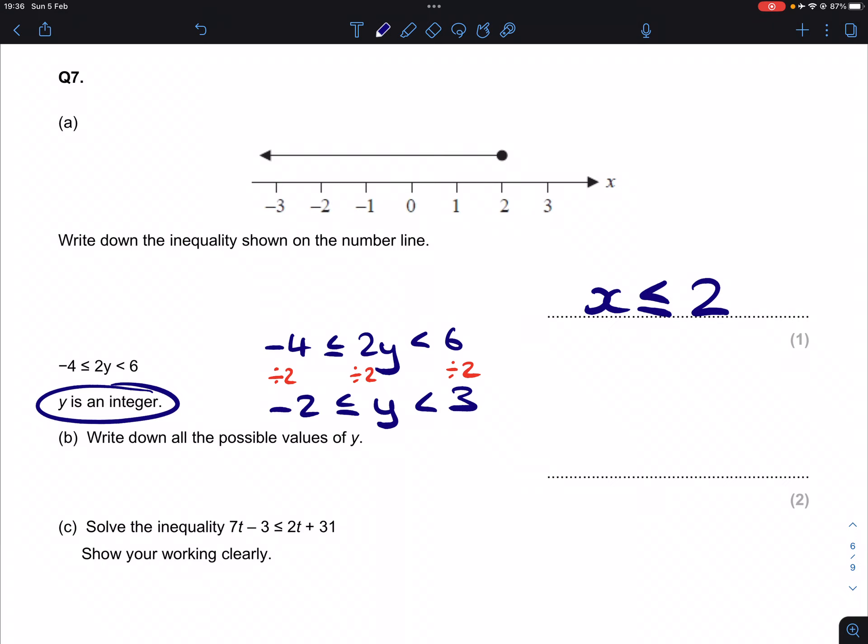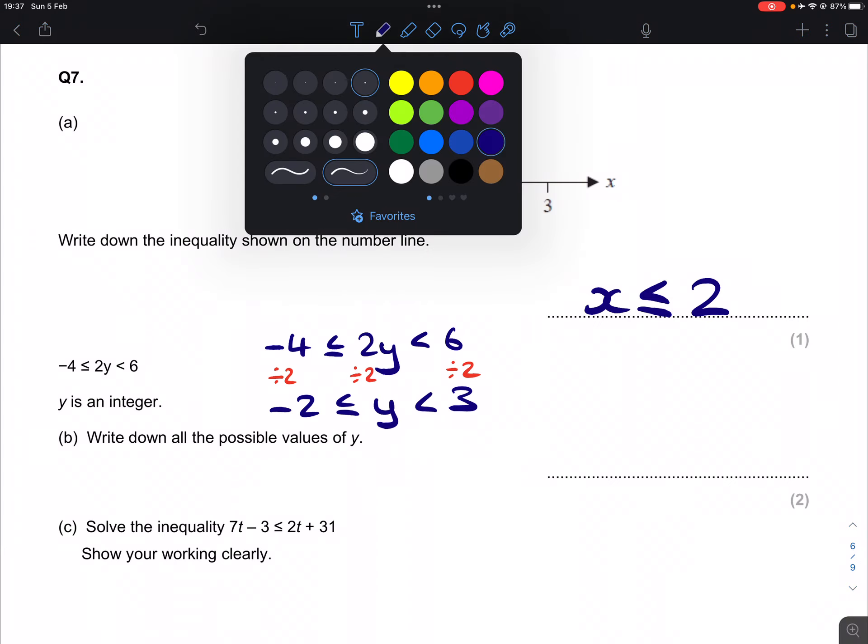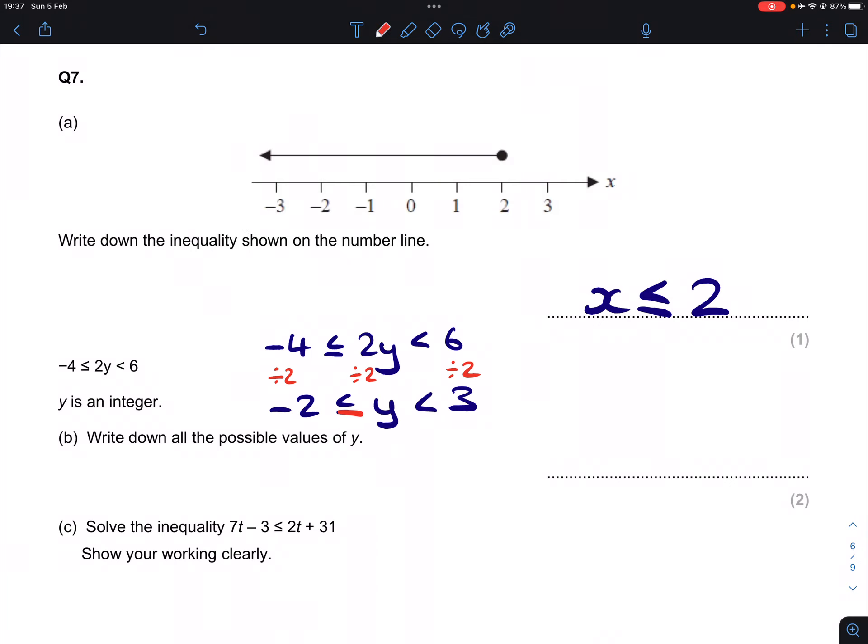We're told that y is an integer, so it's only going to be whole numbers, no decimals involved here. We're being asked to find all of the possible values of y, so in other words, what whole numbers are greater than or equal to minus 2, and these whole numbers must be less than 3.